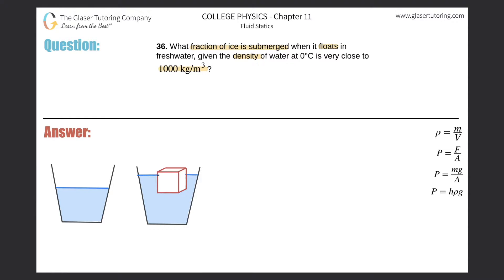There's going to be a certain portion of this ice — if I think about the water line continuing out — there's a certain fraction of this ice that is submerged. According to my picture, it looks like a majority of it: 80%, 90%, 70%, whatever it is. We don't know, but it might be somewhere around that figure. The question is, how do we find this out? We have to go back and think about the main physics concept driving the problem.